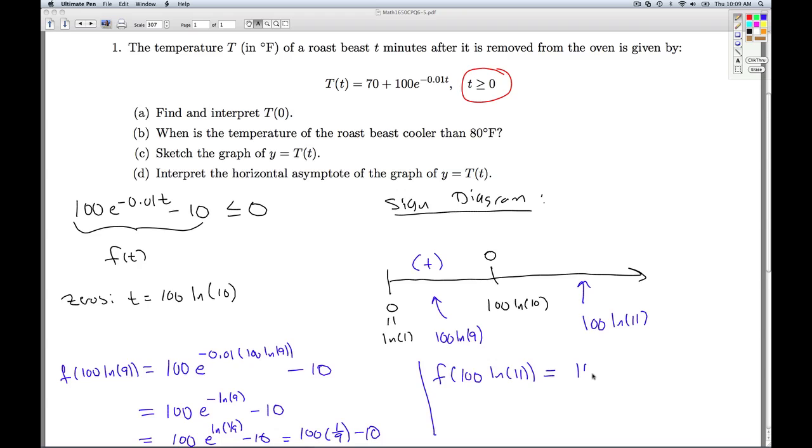Now let's plug in 100 natural log of 11. So this is going to give me e to the natural log of 1 over 11 minus 10. These cancel out to give me 100 times 1 over 11 minus 10.